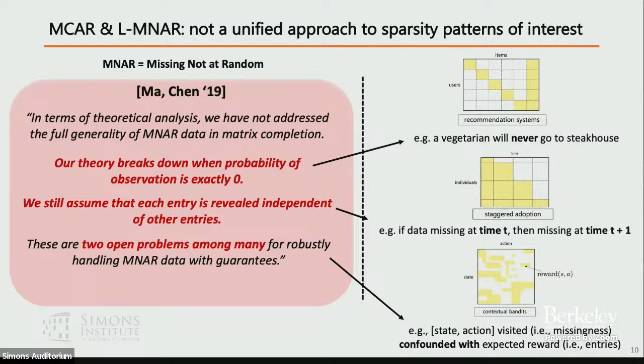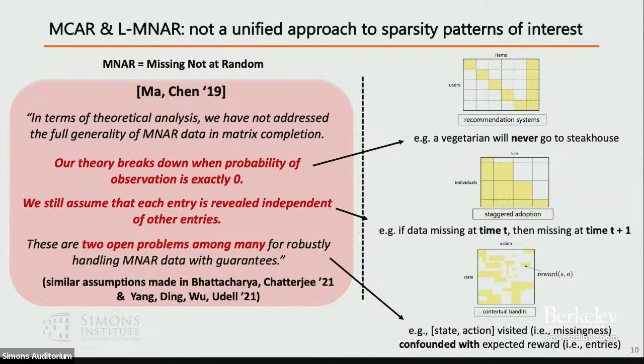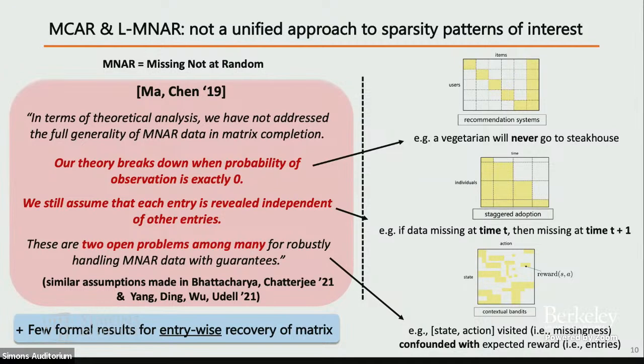Similar assumptions are also made by recent work by Soham Bhattacharya and Sourav Chatterjee at Stanford, and by Yang, Ding, Wu, and Addele at Cornell. Further, most results for matrix completion tend to be recovery on average over all entries in Frobenius norm. But in many settings — like staggered adoption — that's not meaningful. Ideally you'd want entry-wise recovery, which is the strongest notion, but very few results exist for it.